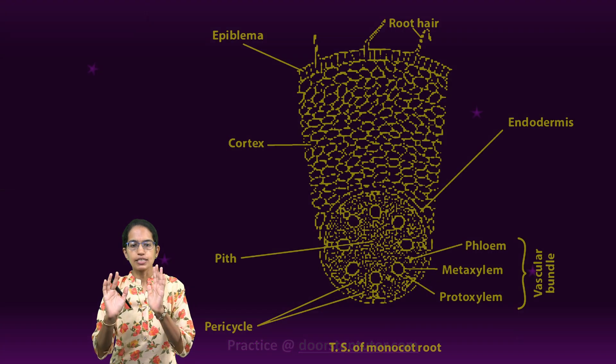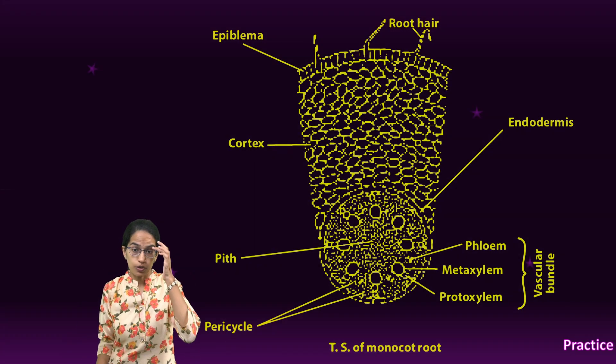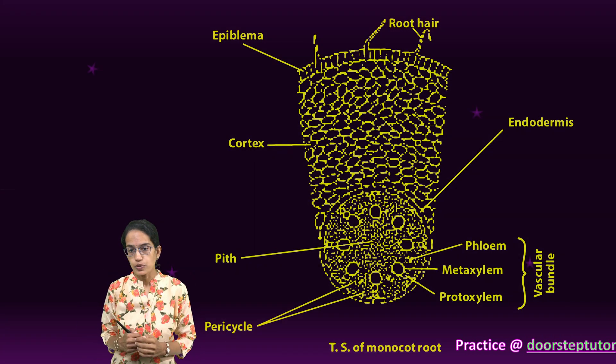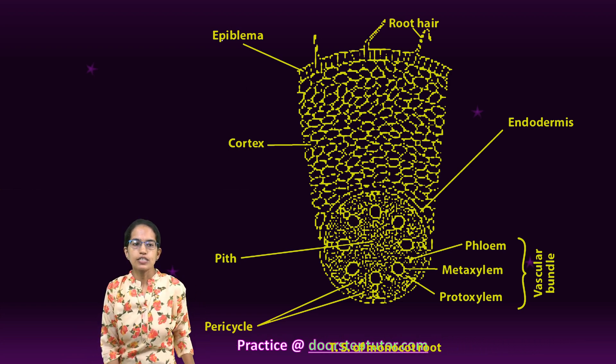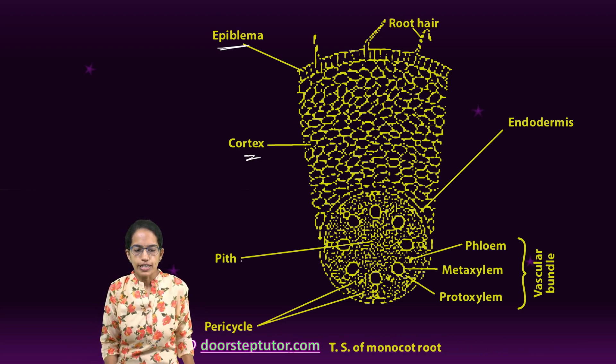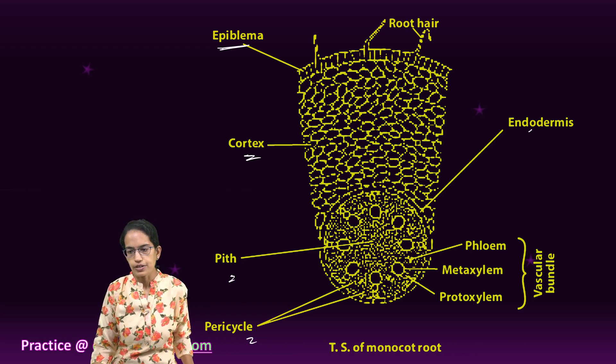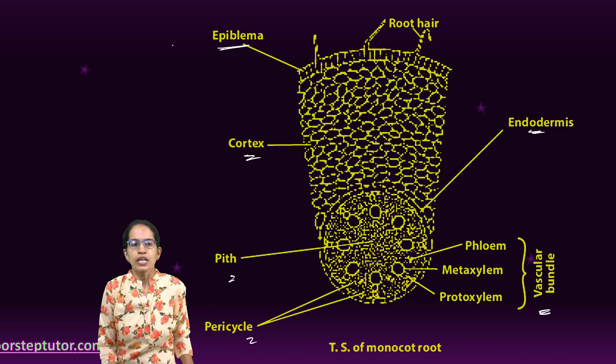To begin with, when we understand the structure of monocot root, this is how a monocot root looks like. We would understand important layers which is epiblema, cortex, pith, pericycle, endodermis and vascular bundle.